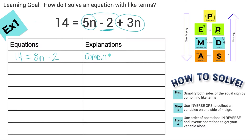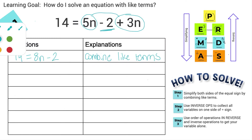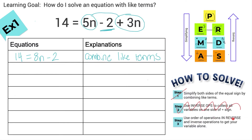So I combined like terms — that's a simplifying step. I made this side of the equal sign more simple. Now we have a basic two-step equation. We did step 1: simplified both sides by combining like terms. Now we use inverse operations to collect all variables on one side. They're already on one side, so now I use order of operations in reverse to get the variable alone. I have a times 8 and a minus 2. Solving, we start at the bottom and go up.